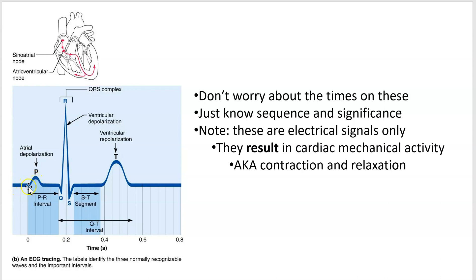The P wave is the first wave and it signifies atrial depolarization — that's when all the sodium rushes into the cell. The QRS complex represents ventricular depolarization, when the ventricles, a much larger mass of muscle, depolarize. Atrial repolarization happens here as well. Then there's the T wave, which is ventricular repolarization — this is when potassium flushes outside.